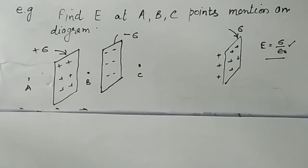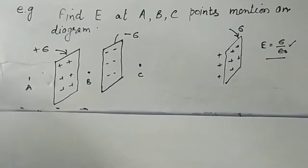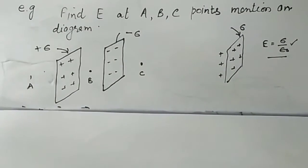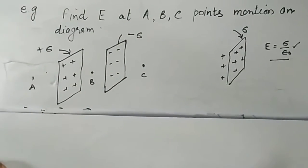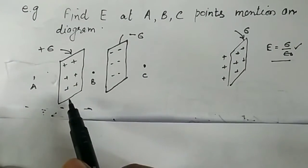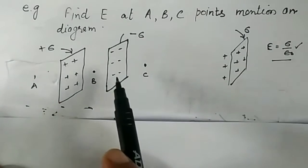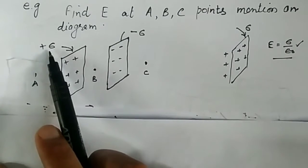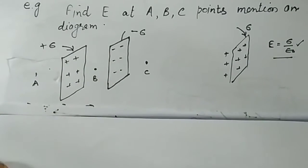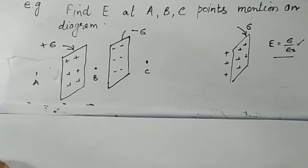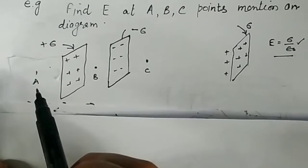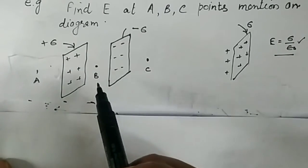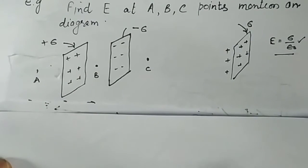In this video we will discuss a very important problem: to find the electric field at points A, B, and C as mentioned in the diagram. Here you can see two conducting sheets — one carrying a positive charge with surface charge density Sigma, and the other carrying a negative charge with surface charge density minus Sigma. Both have the same magnitude. We want to calculate the electric field at point A (extreme left), point B (midway), and point C (extreme right).